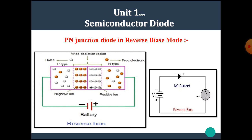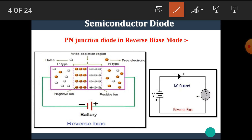Now let's see the PN junction diode in reverse bias mode. In reverse bias mode, the P-type material is connected to the negative terminal of the battery and N-type material is connected to the positive terminal. Then the diode is set in reverse bias mode — that means the anode is connected to the negative terminal and cathode is connected to the positive terminal.